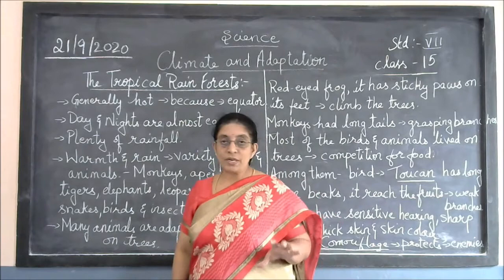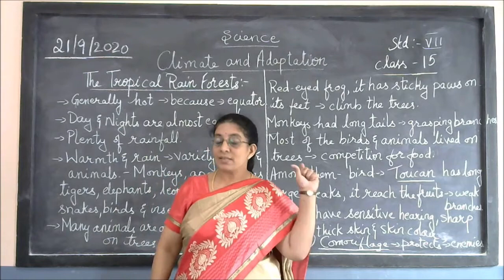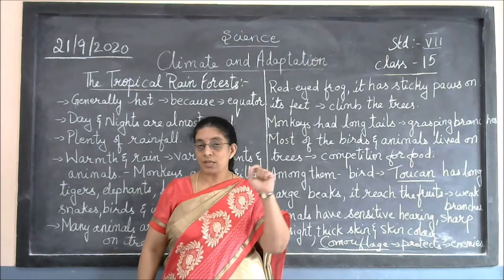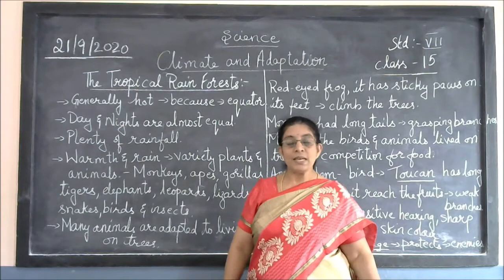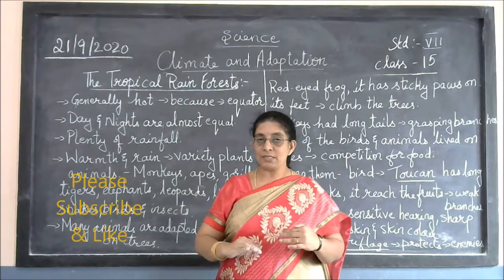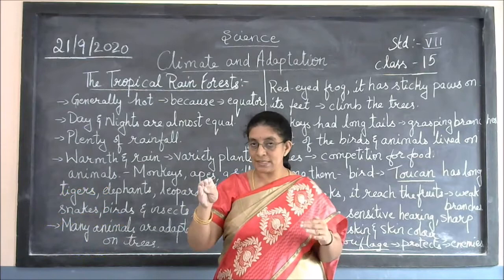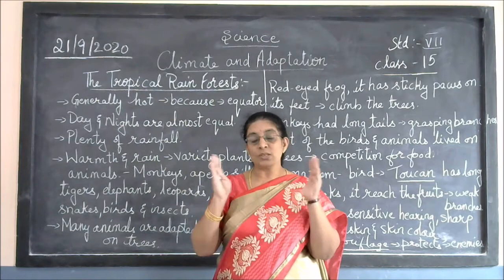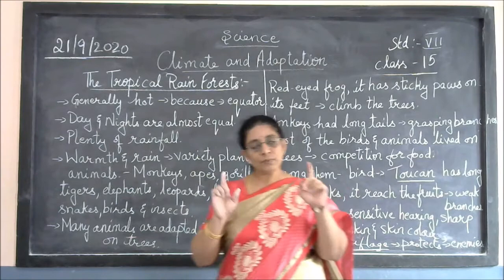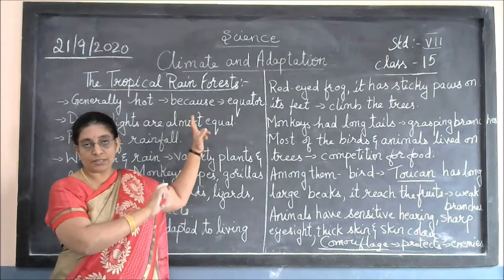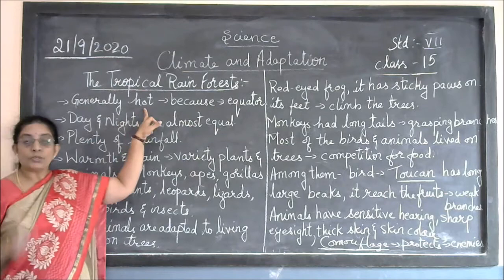The climate here is generally hot. Why is it generally hot? Because this tropical forest is situated near the equator. The equator divides the whole earth into two equal hemispheres — the northern hemisphere and the southern hemisphere. The equator region is always very hot because it is very close to the sun, so this climate is found in this region.